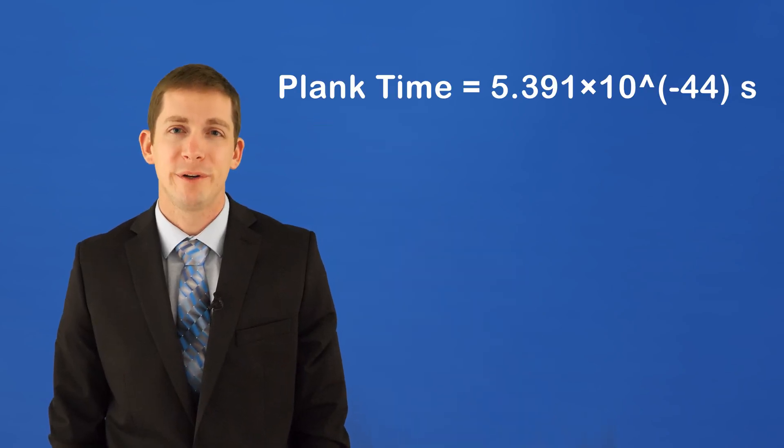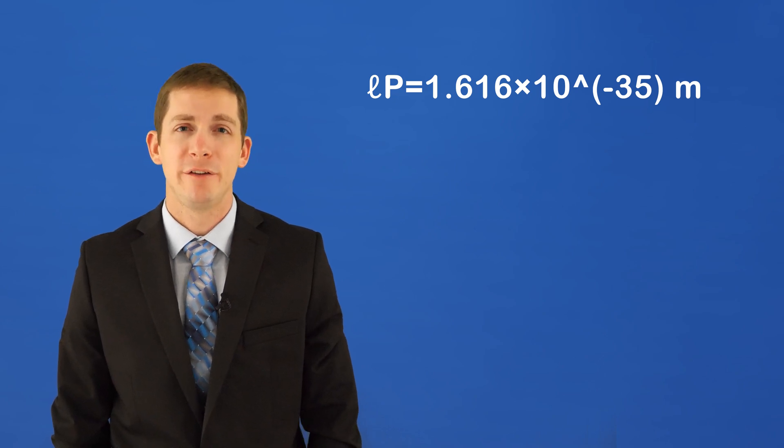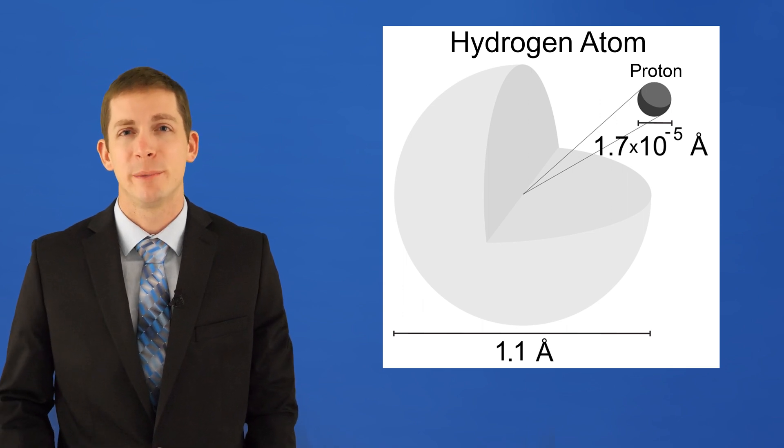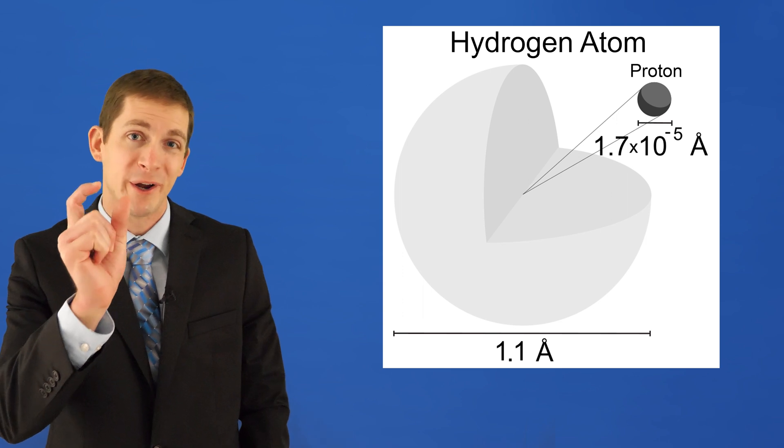The Planck time is the smallest known meaningful unit of time. The Planck length is the smallest known meaningful unit of distance. The diameter of a hydrogen atom is approximately 1.1 angstroms. Really small, right?